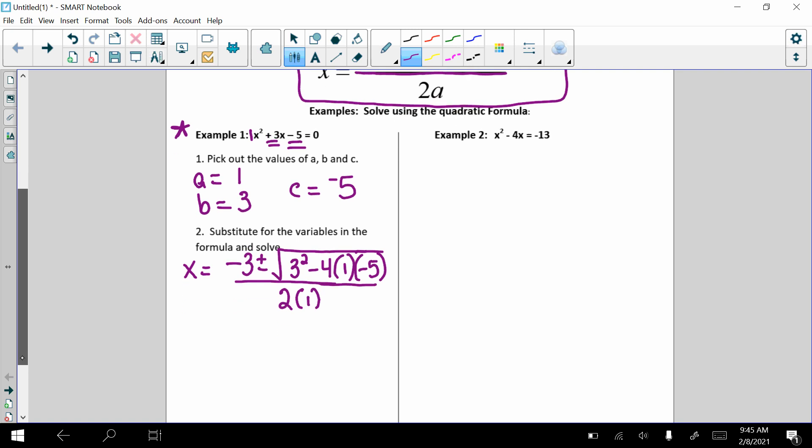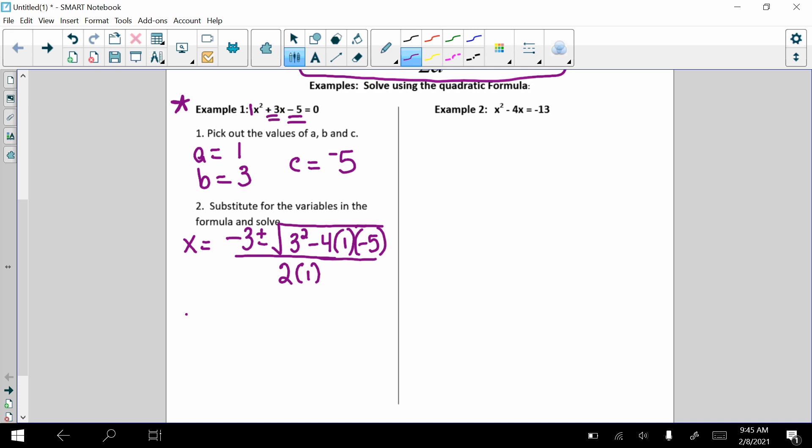Now we need to clean this up. So we'll take the opposite of 3 or negative 3 plus or minus, and now let's look at what we have underneath. 3 squared is 9. Negative 4 times 1 times negative 5 actually gives us plus 20. You have to be really careful with your signs here. We have, notice, a negative or subtraction and a negative. That becomes a positive under the radical. And then it's all divided by 2.